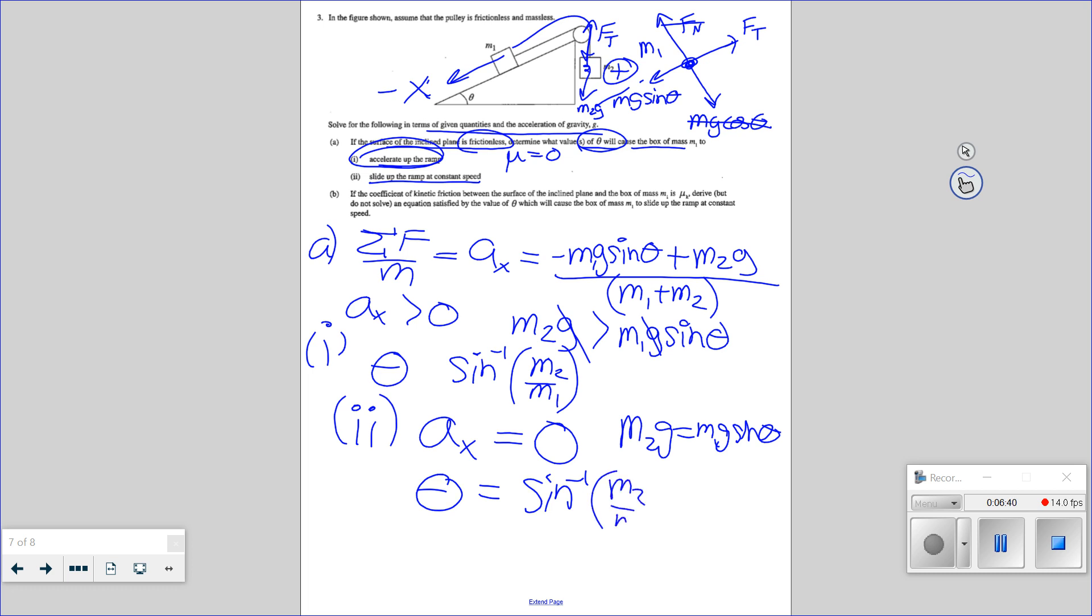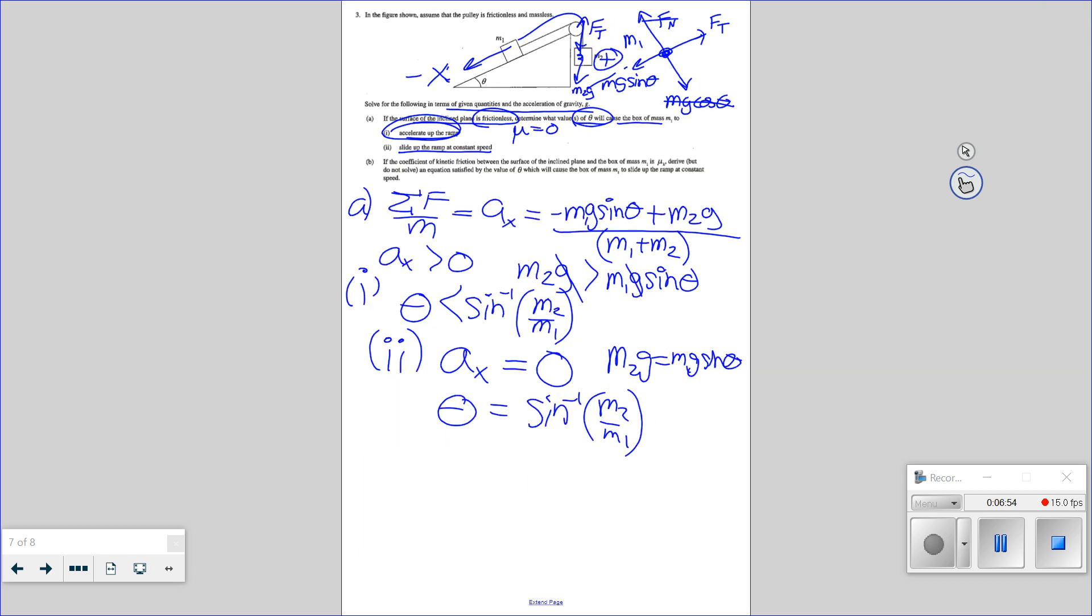But should theta be greater than this or less to get me accelerating up the ramp? I think it needs to be less because sine theta needs to be small. I like, right, like, if this was a flat table, then of course it would run away. M2 would run away with M1. If it was flat and there's no friction, M2 would just easily drag it off. Okay.